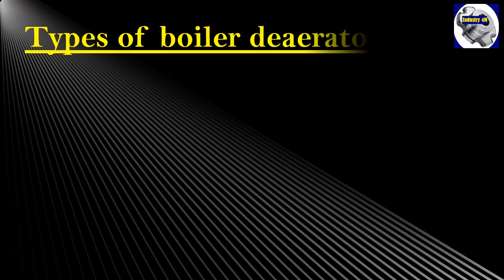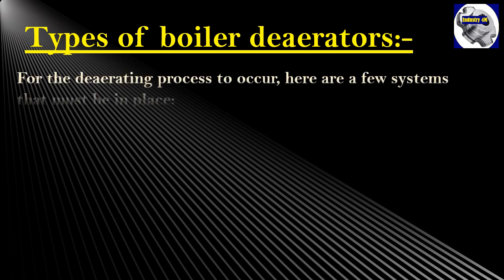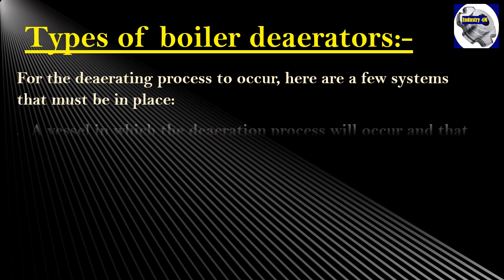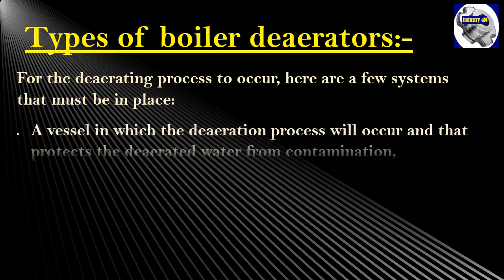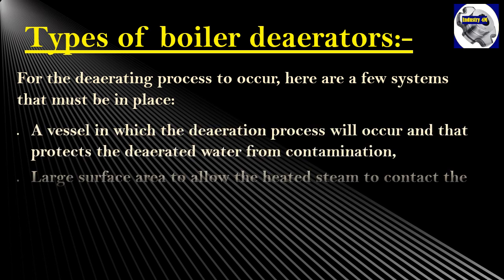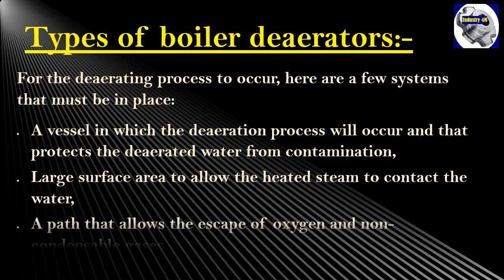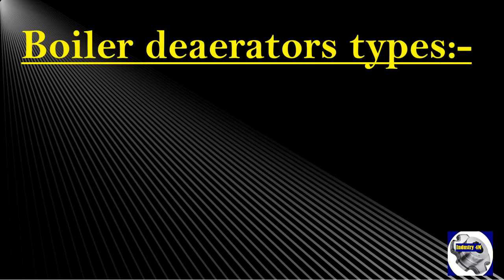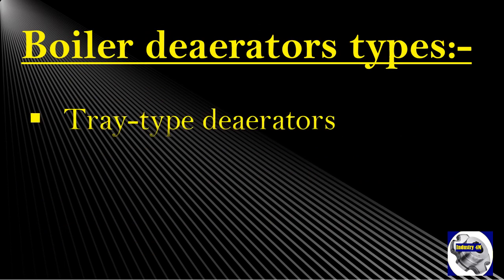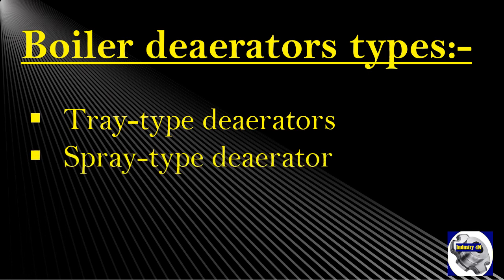For the deaerating process to occur, a few systems must be in place: a vessel in which the deaeration process will occur and that protects the deaerated water from contamination; a large surface area to allow the heated steam to contact the water; and a path that allows the escape of oxygen and non-condensable gases. With that being said, boiler deaerators typically come in two types: tray-type deaerators and spray-type deaerators.